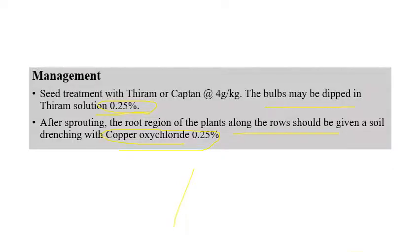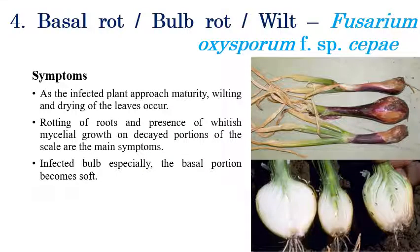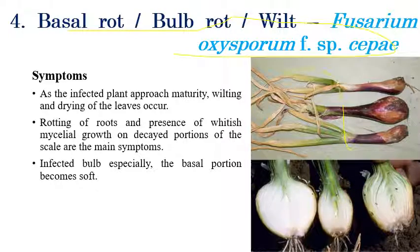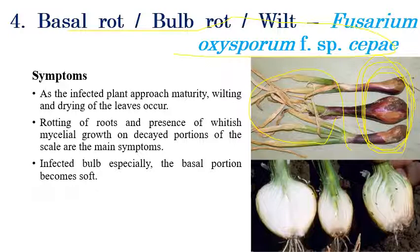The next disease is Basal Rot, Bulb Rot, or Wilting, caused by Fusarium oxysporum f.sp. cepae. As the name indicates, wilting is a key symptom. During the maturity stage, wilting of plants, drying of leaves, and decaying of bulbs can be seen. Whitish color mycelial growth can also be seen on lightly-developed bulbs. Especially on the basal portion of the bulb, softening and white color mycelial growth can be observed.